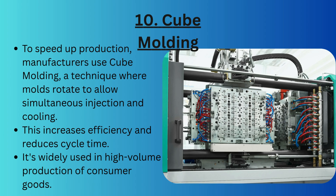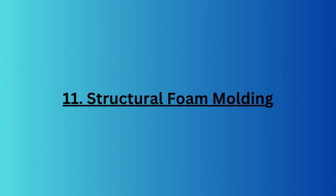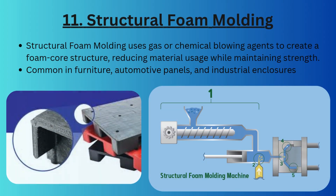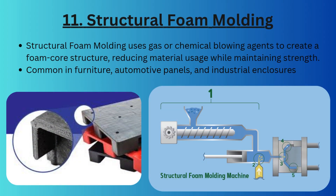Next we have cube molding. To speed up production, manufacturers use this technique where the mold rotates, allowing simultaneous injection and cooling. This increases efficiency and reduces cycle time, and it is widely used in high-volume production of consumer goods.